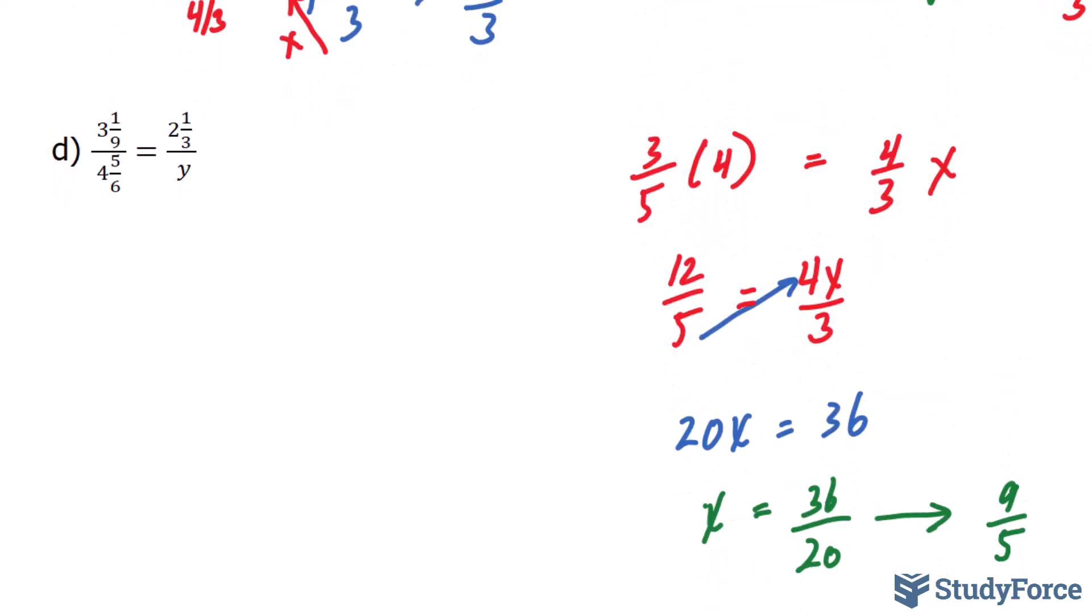As you can see in question D, it is a little more complicated than the previous three. But let's apply the same ideas. This term, that term, and that term need to be made into improper fractions before we can start. So 3 and 1 over 9 is the same thing as 28 over 9. 4 and 5, 6 is the same thing as 29 over 6. And 2 and 1 thirds is the same thing as saying 7 over 3.